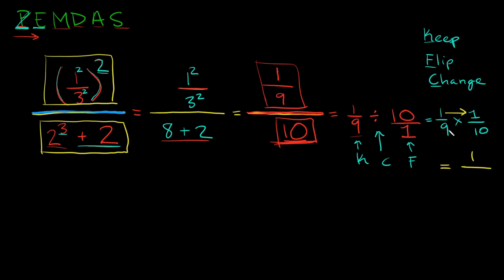And then in the denominator we have nine times ten. What's nine times ten? Ninety. So your final answer is one over ninety.